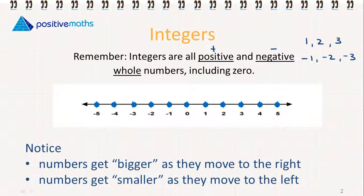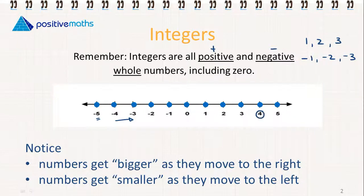We need to be careful in saying bigger and smaller here, because some people think 5 is a bigger number — but it's not 5 by itself, it's minus 5. Minus 5 is on the left, so all of the numbers to its right are bigger than minus 5. If we take 4, all of the numbers to the right of 4 are going to be smaller.